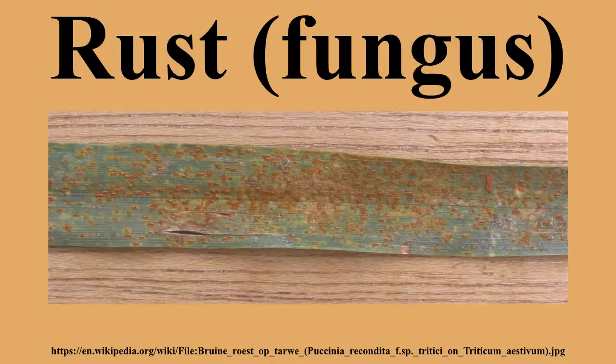Plants with severe rust infection may appear stunted, chlorotic, or otherwise discolored. Rust sporulates on affected plant parts and is most commonly seen as colored powder composed of tiny urediniospores which land on vegetation producing pustules, or uredinia, that form on the lower surfaces.